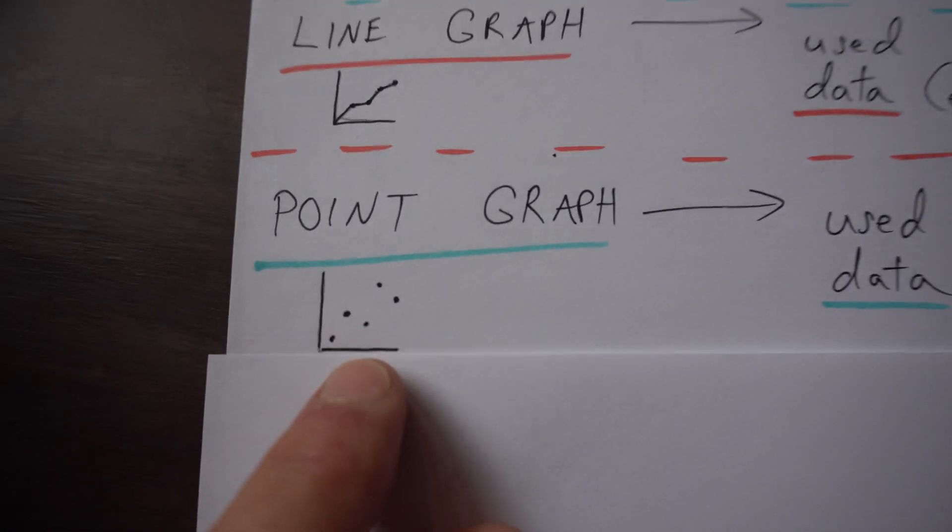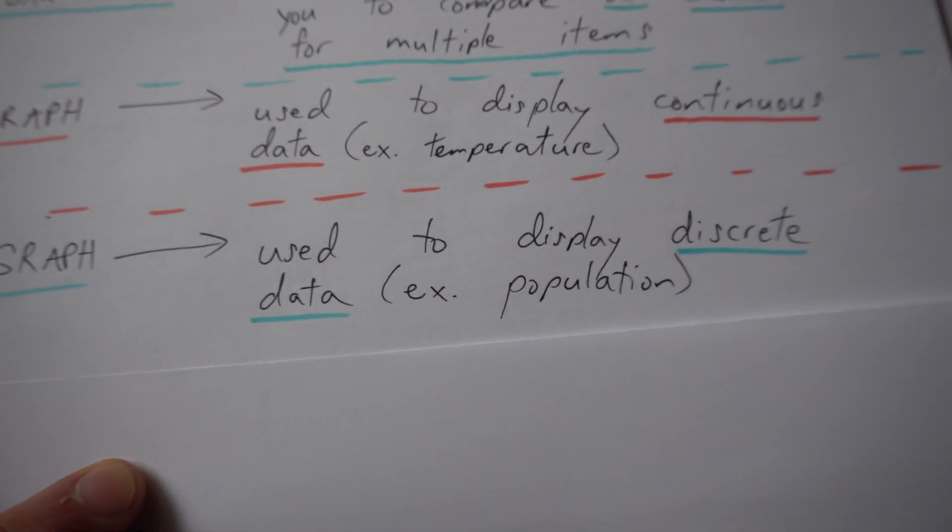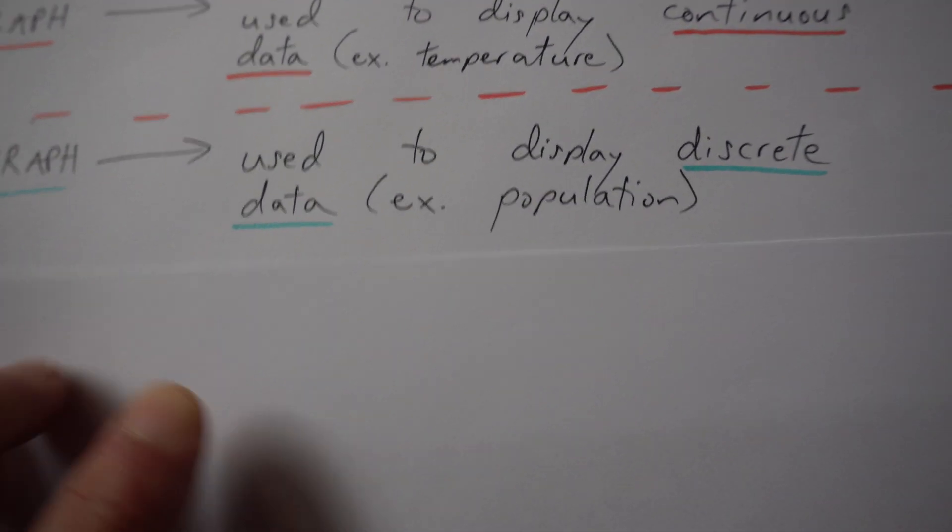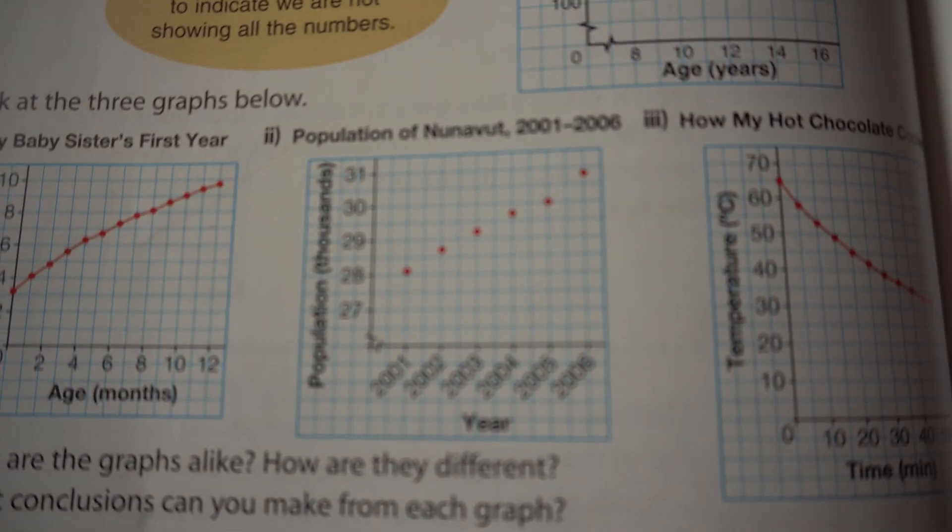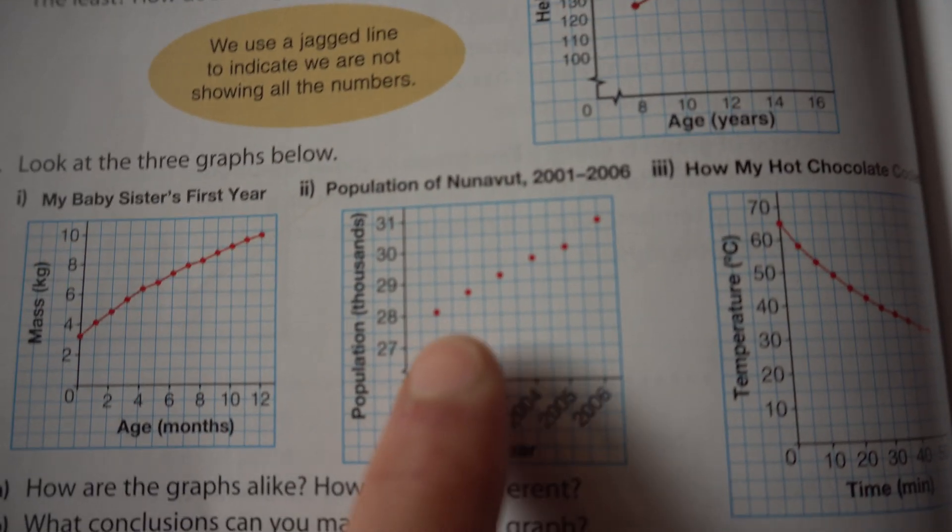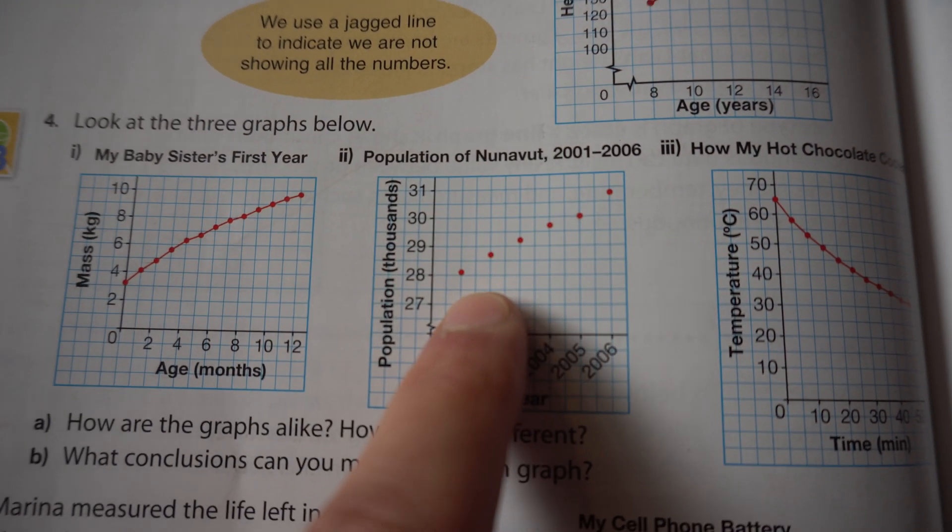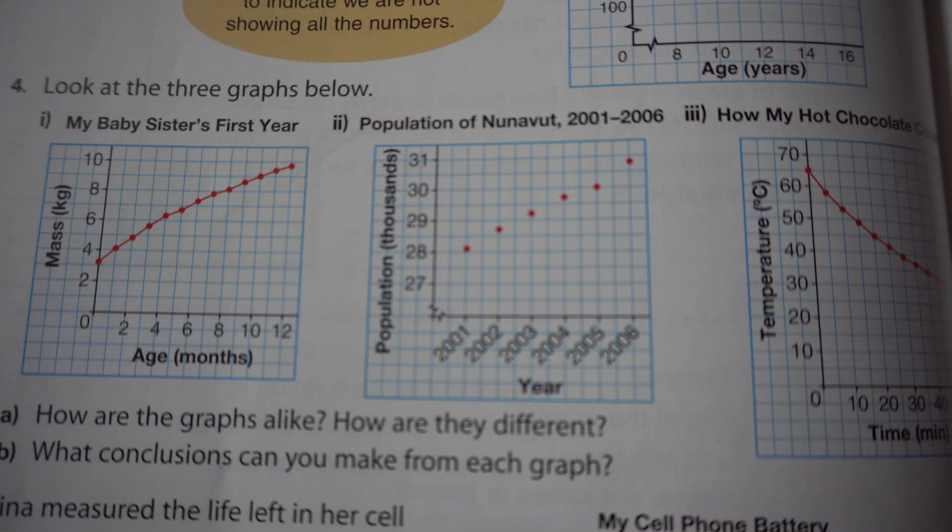We have lastly a point graph, and that's when you have a scatterplot of points, and that's when you're displaying discrete data, for example population. And I give you a sneak preview, but here it is again. Here is a population graph of Nunavut.